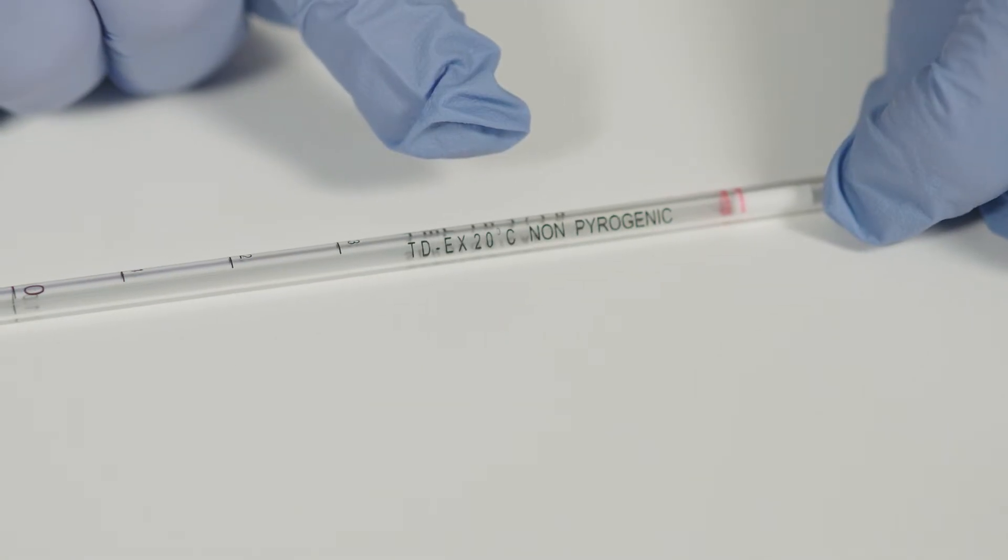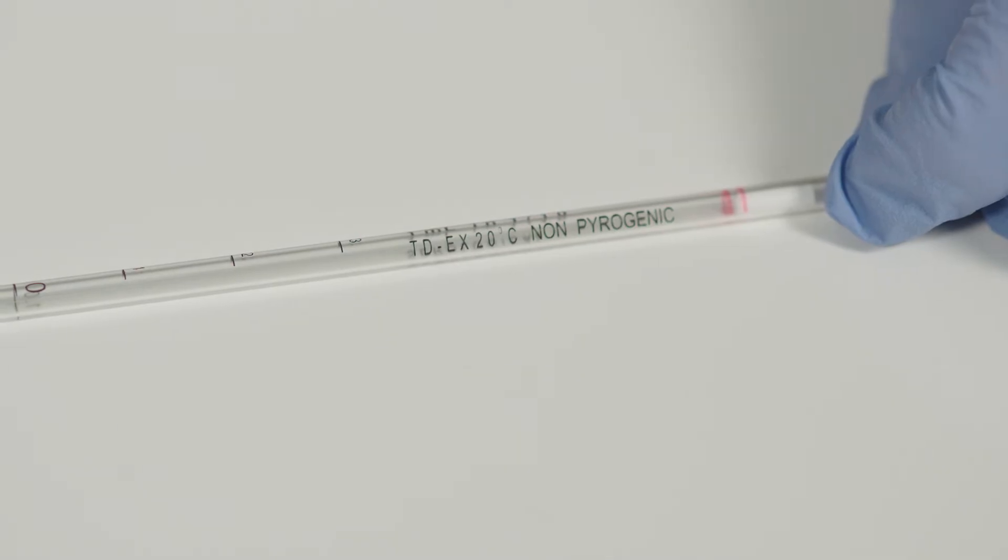You'll also see a temperature listed on the side of this pipette. That's the temperature at which the pipette would be most accurate and will tend to be standard room temperature.